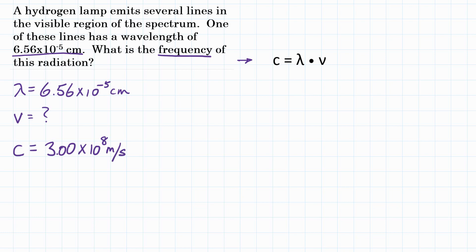We have wavelength and the speed of light, so we can solve for frequency using those two. Let's manipulate our equation to solve for frequency. We're going to divide both sides by wavelength so that wavelength cancels out on the right side, leaving only frequency by itself. Flipping the equation, frequency equals speed of light divided by wavelength.